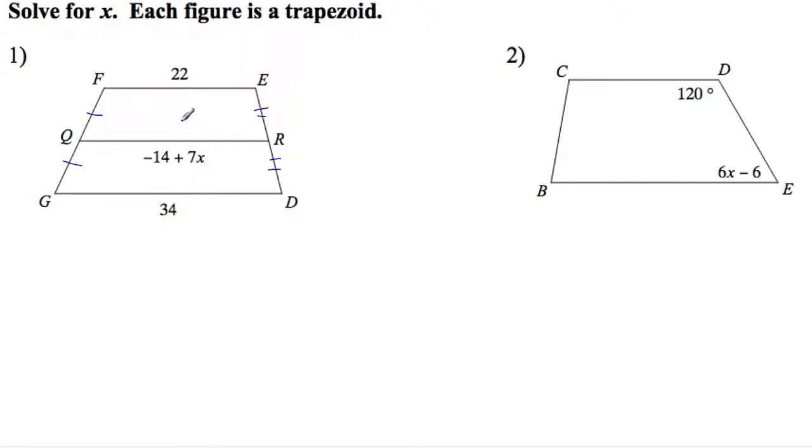We call this line a median. So that means that one-half of 34 plus 22 is going to equal -14 plus 7x.